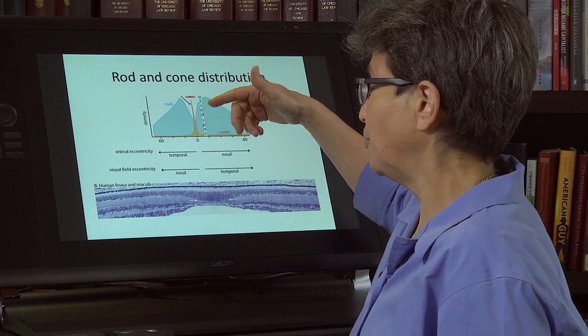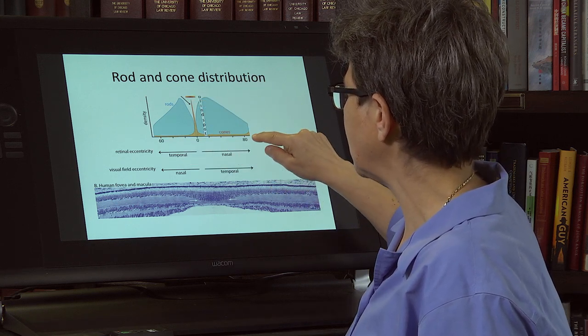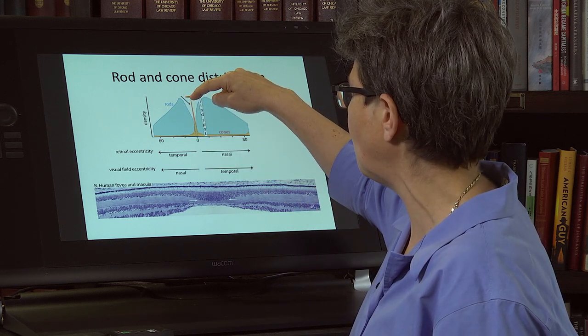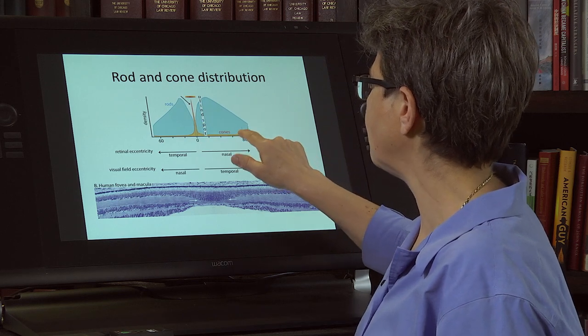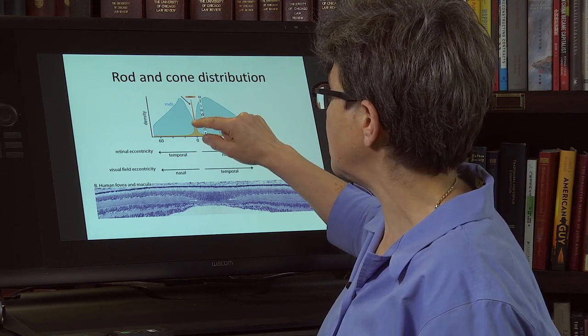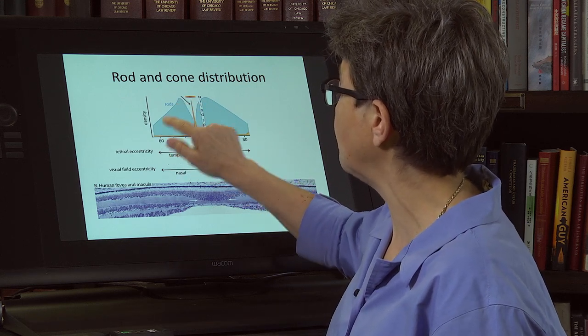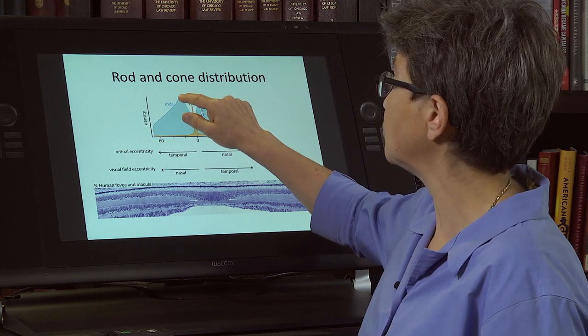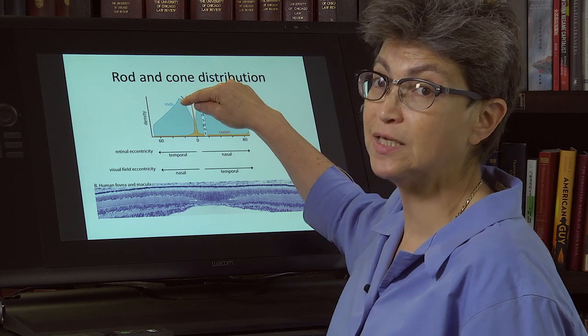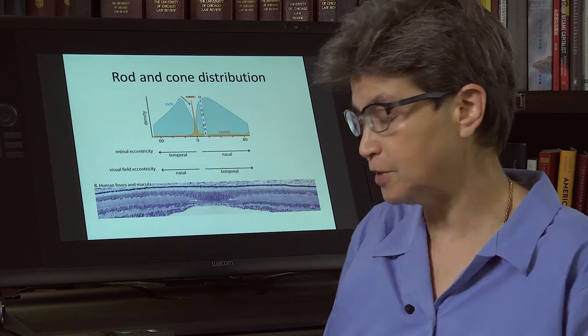So here in this orange color is the distribution of cones. You can see that there's a peak right here at the fovea. It comes down and way out in the periphery, you have very few cones. And the distribution of rods is conversely, there are none in the fovea and they are greatest, much greater. There's a lot of rods, but they're concentrated out in the periphery, reaching a maximum density about 15 degrees off of the center of vision.